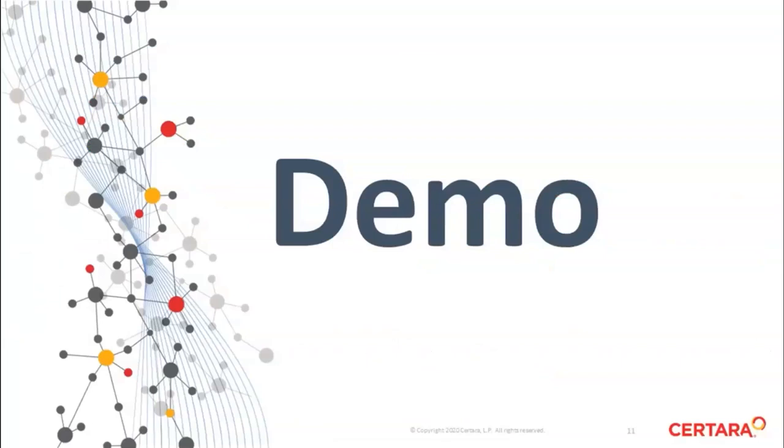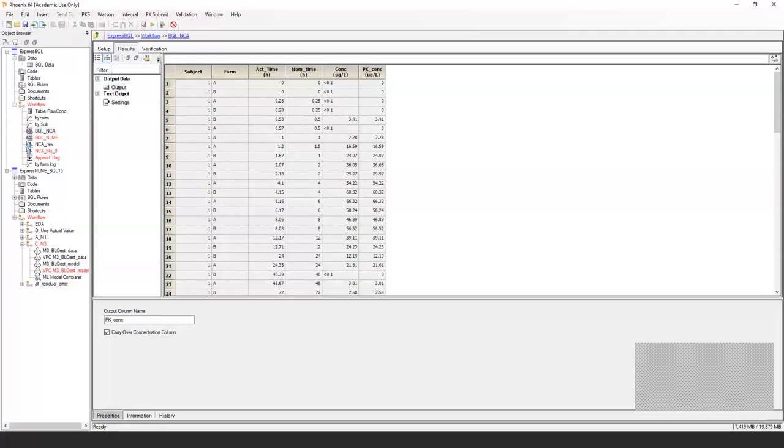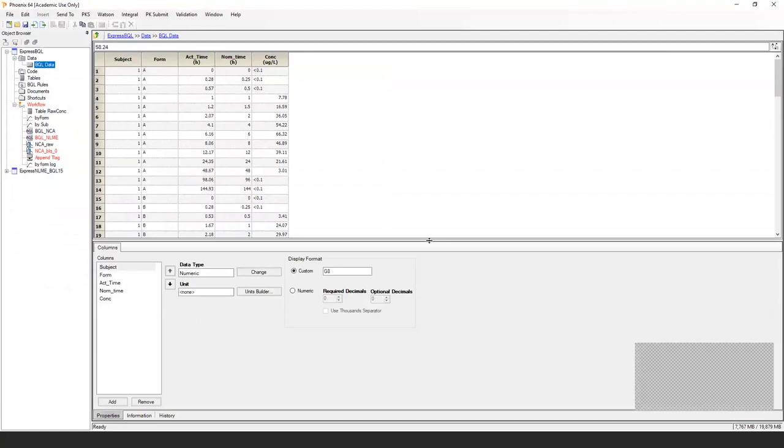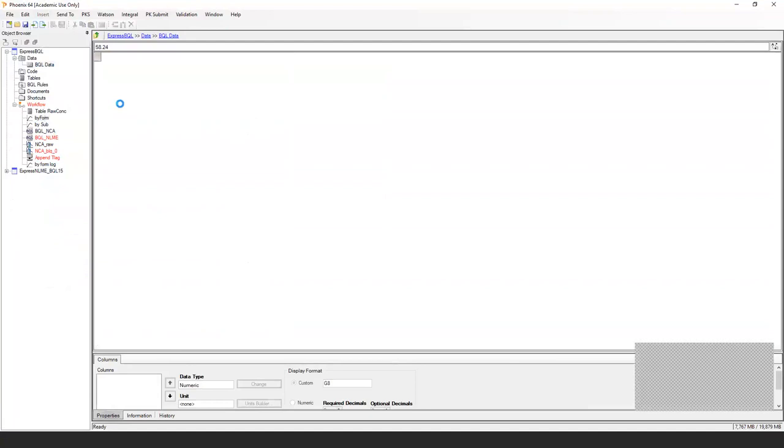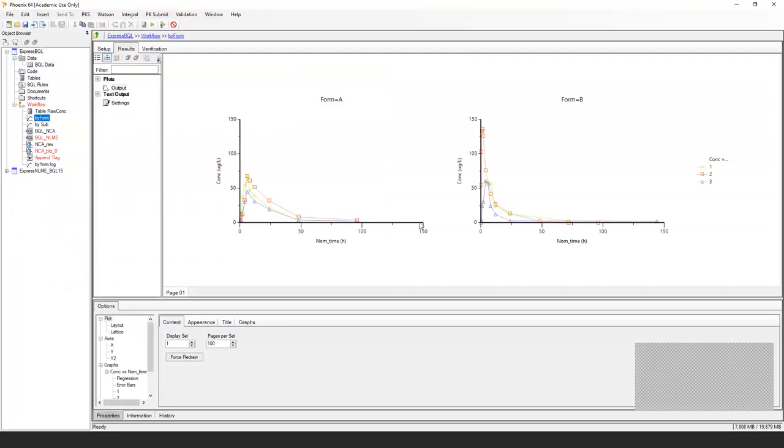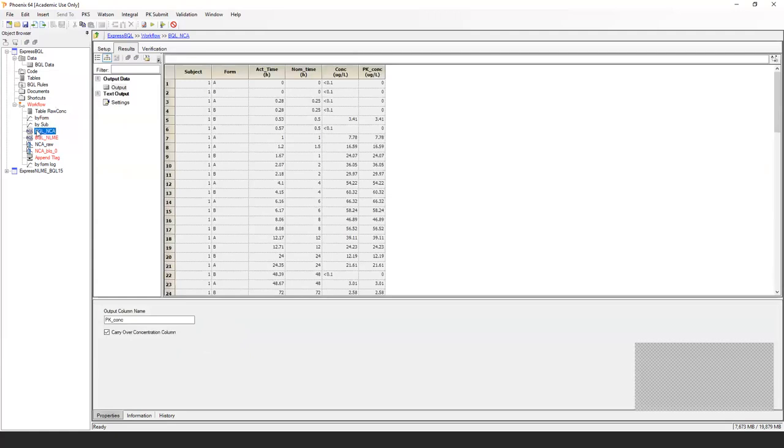So at this point I want to go into the demo and I'm going to discuss a couple of things. One quick look at the BQL tool and then move into the models and then we're going to review some examples later. So I'm just going to share my Phoenix project. Hopefully you see that now. So this is a much simpler set of data in this first project. I just got three subjects, a couple of different formulations, and it looks something like this. So I've got a formulation A, which is more rapidly absorbed and formulation slightly slower absorbed here.